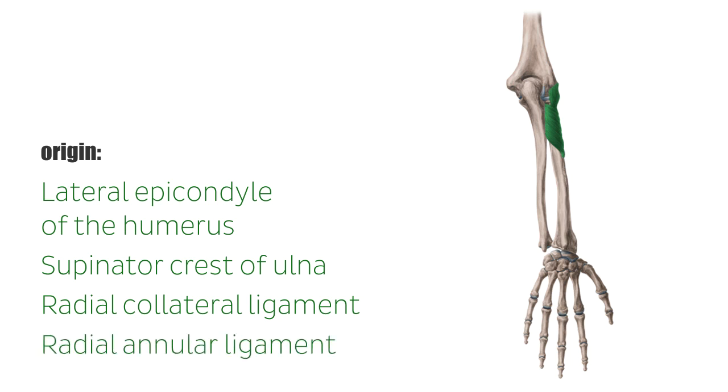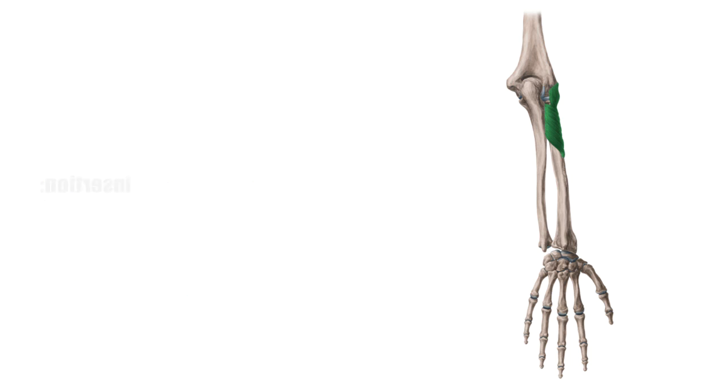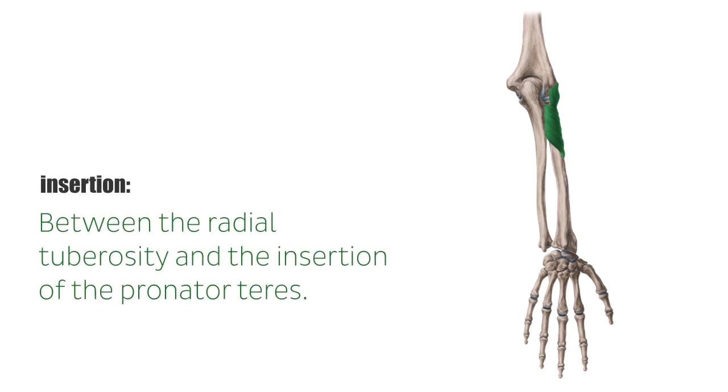From there, the muscle curls dorsally around the neck of the radius and inserts laterally between the radial tuberosity and the insertion of the pronator teres.